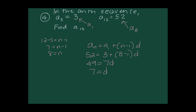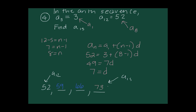Now that I know d equals 7 and the 12th term is 52, I can build forward: the 13th term is 59, the 14th is 66, and the 15th term is 73. The tough part of this problem is fast-forwarding the sequence to determine the common difference, then using it to find the desired term.